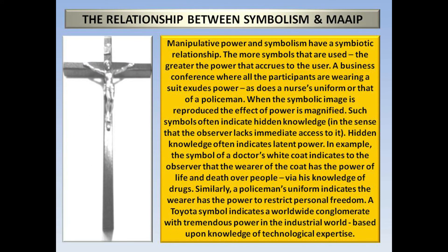The relationship between symbolism and MAIP: manipulative power and symbolism have a symbiotic relationship. The more symbols that are used, the greater the power that accrues to the user. A business conference where all participants are wearing a suit exudes power, as does a nurse's uniform or that of a policeman. When the symbolic image is reproduced, the effect of power is magnified. Such symbols often indicate hidden knowledge — in the sense that the observer lacks immediate access to it. Hidden knowledge often indicates latent power. For example, the symbol of a doctor's white coat indicates the wearer has power of life and death via knowledge of drugs. Similarly, a policeman's uniform indicates the power to restrict personal freedom. A Toyota symbol indicates a worldwide conglomerate with tremendous industrial power, based upon technological expertise.